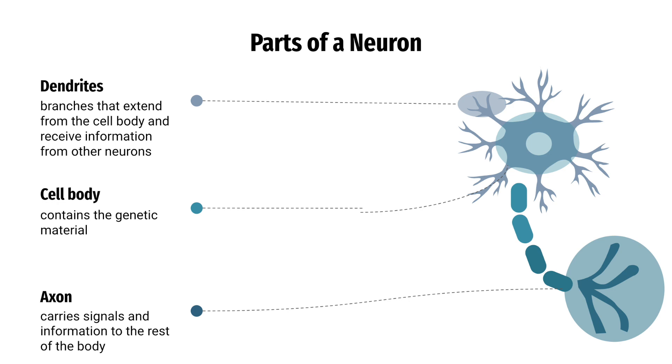A neuron is composed of three main parts: the cell body, the dendrites, and the axon. The cell body contains the nucleus, which contains the genetic material that controls the cell's activities.